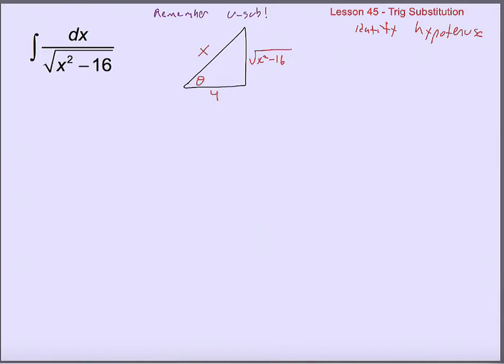Label one of those angles as theta. It doesn't matter which angle is theta, but we placed the 4 on the adjacent side knowing we were going to put theta there — that way we deal with secant instead of cosecant. So let us figure out how we can replace the dx and the square root of x squared minus 16 in our integral, because that's the idea here.